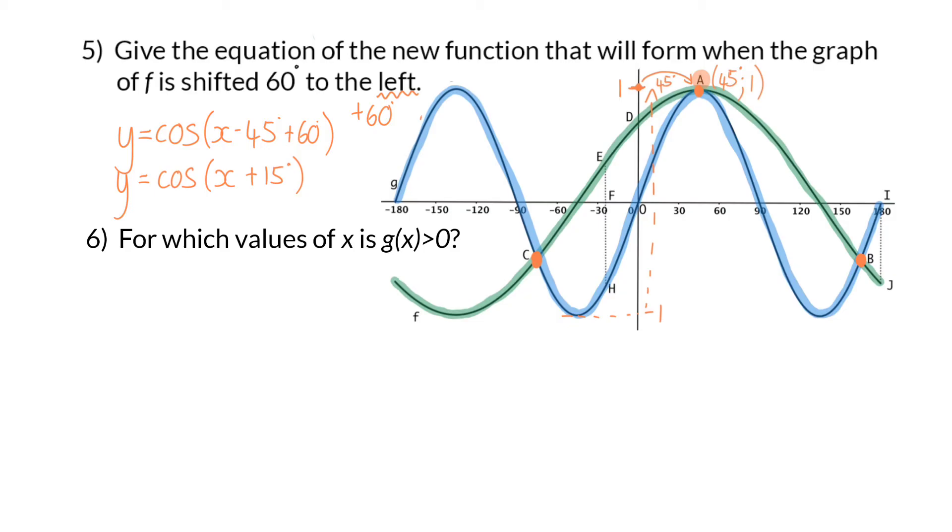Question 6: For which values of x is g(x) bigger than 0? For this question, we only focus on g(x), which is the blue graph. And the question is, where will this graph have y values that are bigger than 0, and all the y values bigger than 0 are above the x-axis?